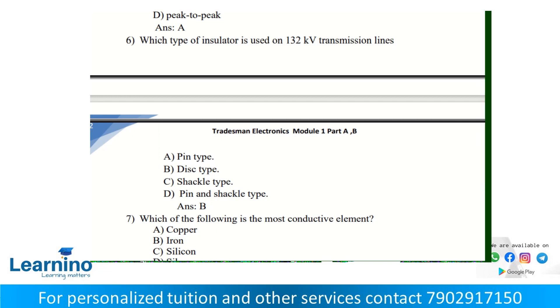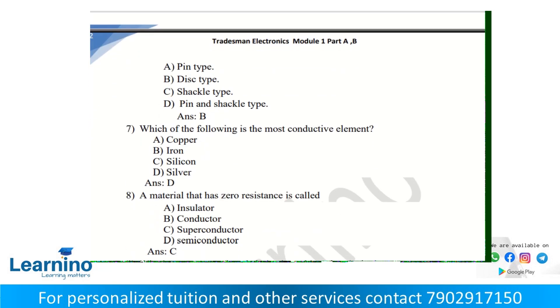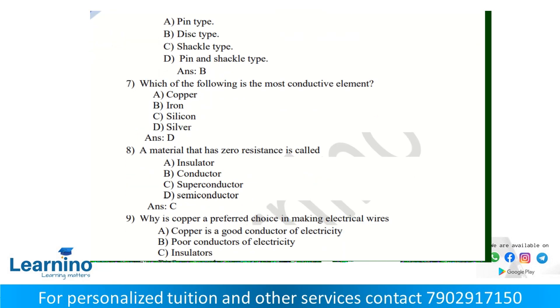Which of the following is the most conductive element? The resistivity of copper is 1.72 into 10 raised to minus 8 ohm meter, iron is 9.7 into 10 raised to minus 8, silicon is 0.1 to 60, and silver is 1.64 into 10 raised to minus 8. Silver has the lowest resistivity, so it has high conductivity.